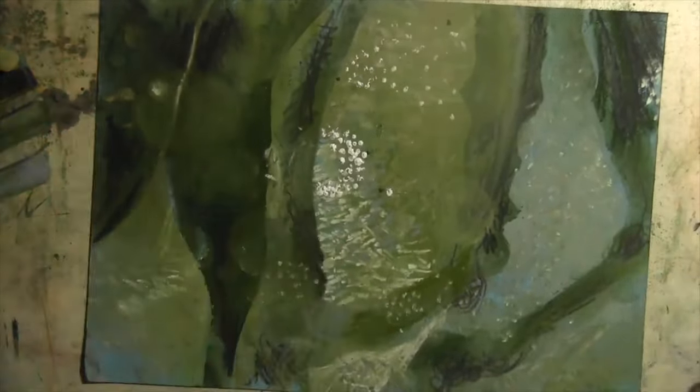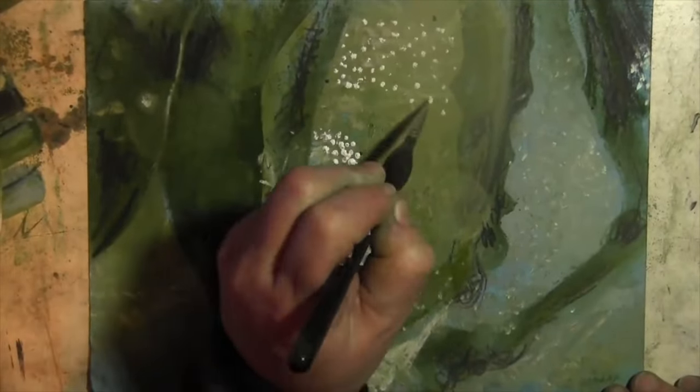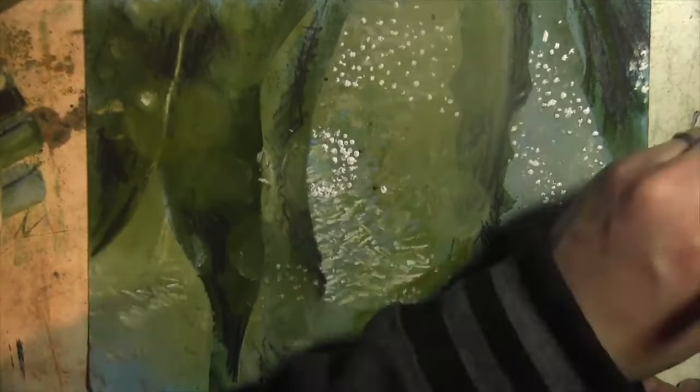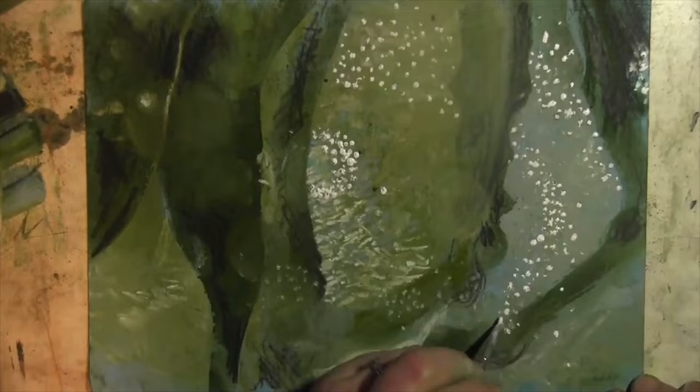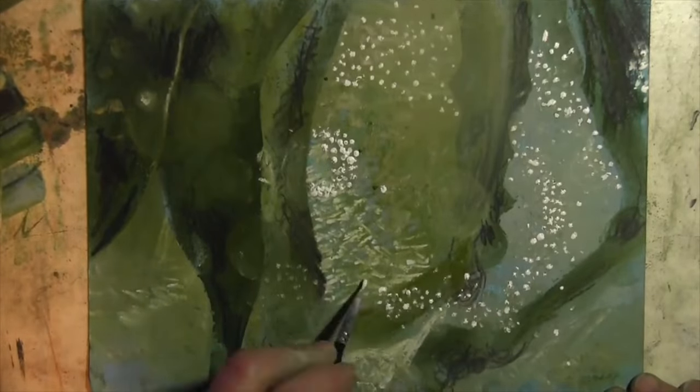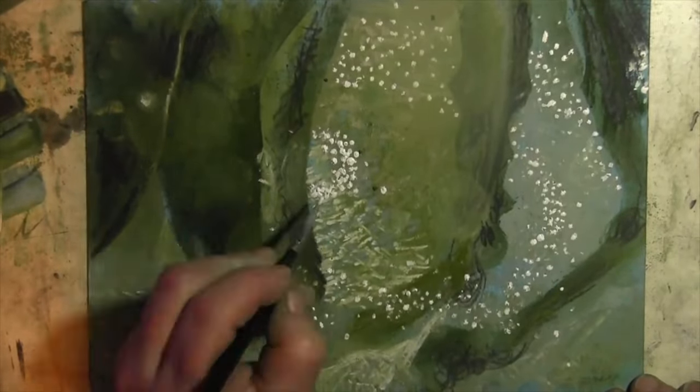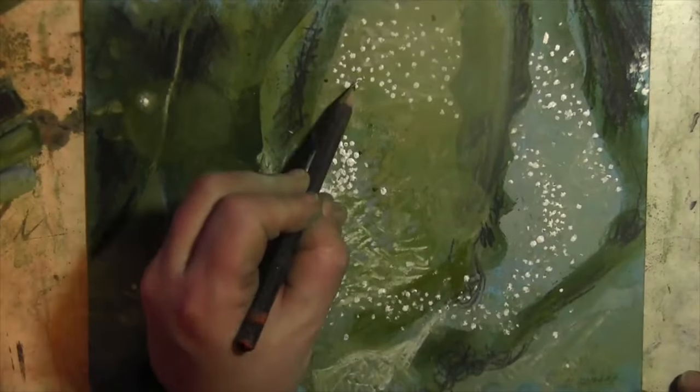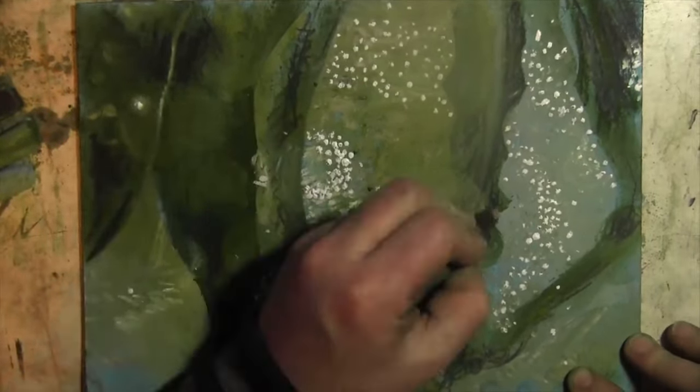If you put things which aren't Thargoid in origin into these receptacles, different things happen. Nothing might happen, but if you put a guardian relic into them, the Thargoids go absolutely mental.